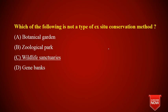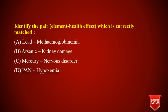Which of the following is not a type of ex-situ conservation method? Ex-situ conservation involves growing species in an artificial ecosystem, laboratory, or artificial reserve. Botanical gardens and zoological parks are ex-situ reserves. Gene banks are also artificial and therefore ex-situ. Wildlife sanctuaries, however, are a natural environment and represent in-situ conservation — so wildlife sanctuary is the odd one out.